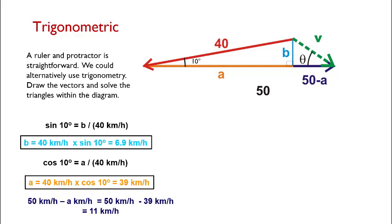The rest of the train's vector is a value represented by 50, which was the total line length, minus the length of A, which we just solved for. Simple subtraction brings us to 11 kilometers per hour.